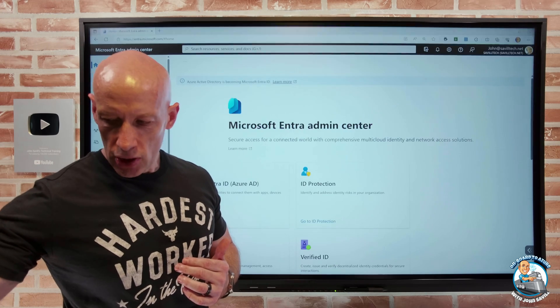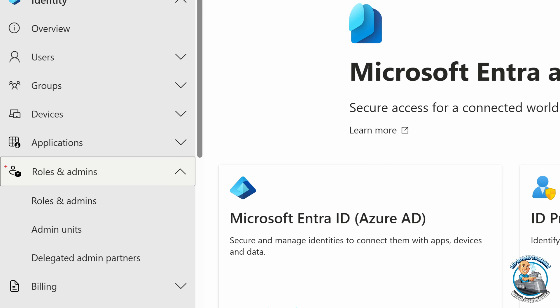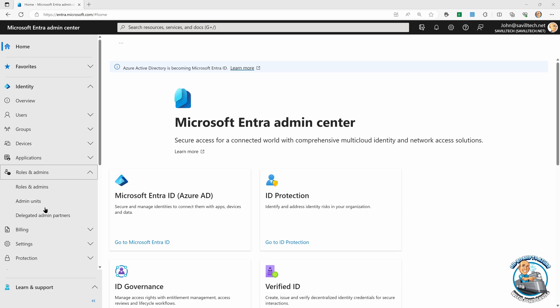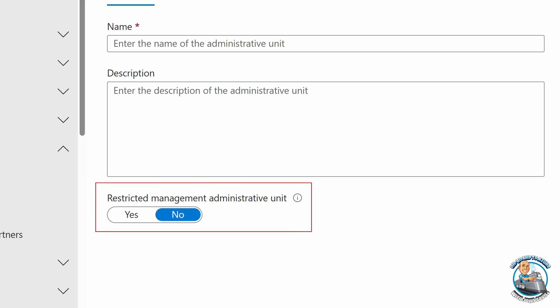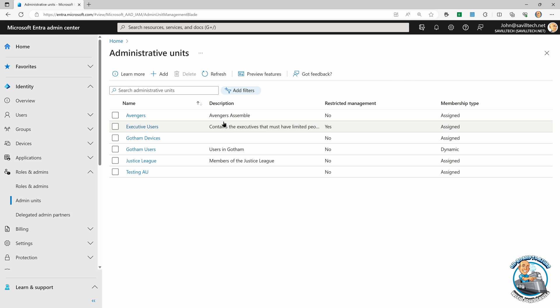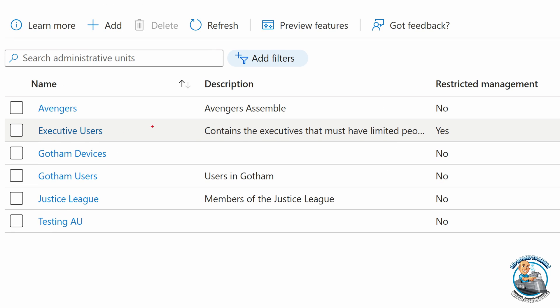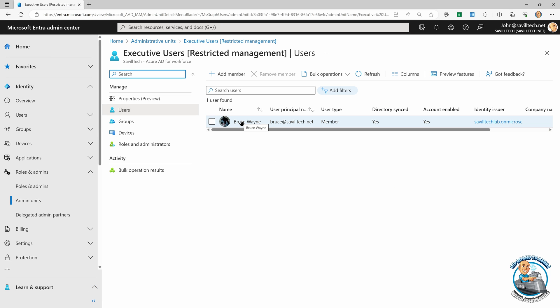So let's take a quick look at this. If we jump over, so I'm in the Entra portal and it's the roles and admins, I'm looking at admin units. When I go and create my administrative unit, we have this restricted management administrative unit. And that's where if I set that to yes, it means the global roles will not have permission to it. It's only the people assigned roles at the administrative unit itself. So I have one here, as we can see, executive users. And I've set the restricted management to yes. So if I go and look at executive users, I've just got Bruce Wayne in there. Bruce Wayne is very concerned about other global admins or help desk admins messing.